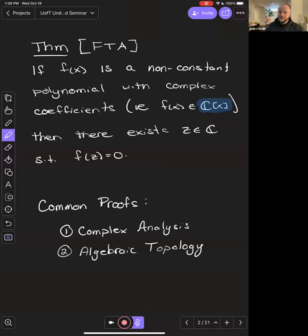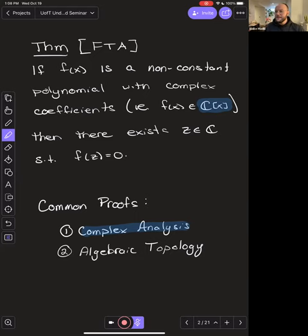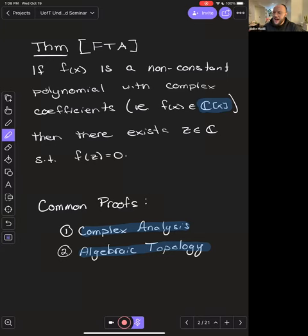This is an often stated, rarely proved theorem. The most common proof appears in a complex analysis course, where basic contour integration is used. There also exist algebraic topology proofs. But as an algebraist — I did my PhD in non-commutative ring theory — it feels bad that the two main proofs come from analysis. So one of my favorite proofs, the one I'm going to talk about today, is an algebraic proof of the fundamental theorem of algebra. Justice for algebra, if you will.